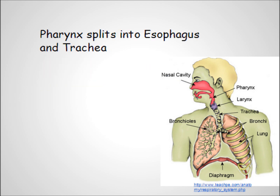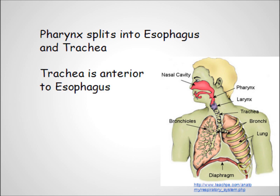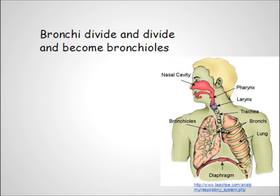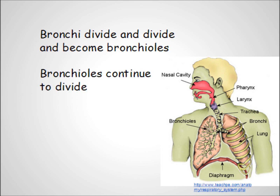At the bottom of the pharynx, the tube splits and becomes the esophagus, which leads to the stomach, and the trachea, or windpipe, which leads to the lungs. The trachea is anterior to the esophagus. The trachea then divides into the left and right bronchi — bronchus is the singular. The bronchi lead into the lungs, where they divide and divide and become bronchioles, which continue to divide into smaller and smaller tubes.